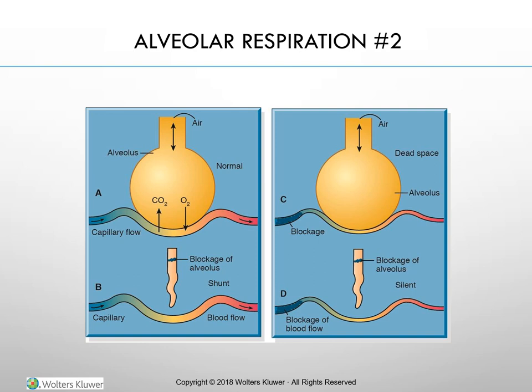In the diagram of alveolar respiration: A shows the normal ratio — in the healthy lung, a given amount of blood passing an alveolus is matched with an equal amount of gas; the ventilation-perfusion (VQ) ratio is 1:1. B shows a low VQ ratio or shunt — when perfusion exceeds ventilation, blood bypasses the alveoli without gas exchange, seen with obstruction such as pneumonia, atelectasis, tumor, or mucus plug.